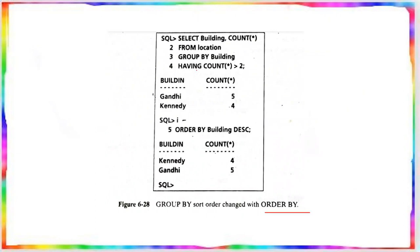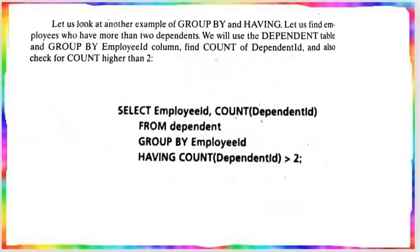By default, GROUP BY sorts in ascending order, but we can change this with ORDER BY. You can use ORDER BY to get the output in descending order. So the output has been changed to descending order. This is a combined example of GROUP BY and HAVING — you can find employees who have more than 2 dependents.